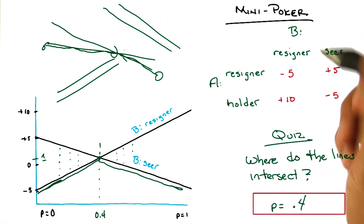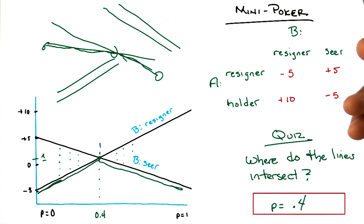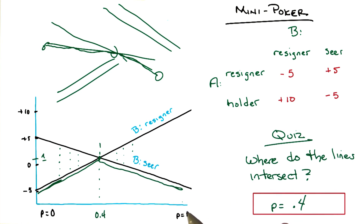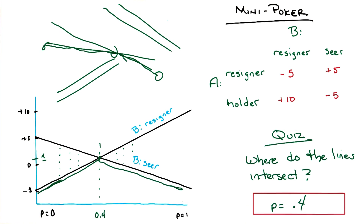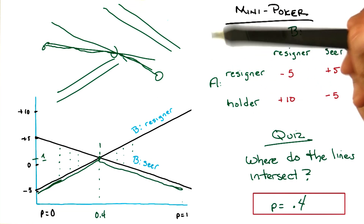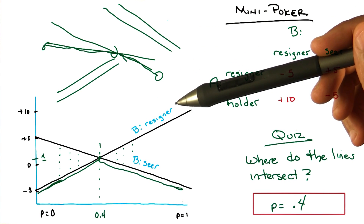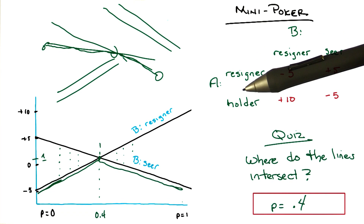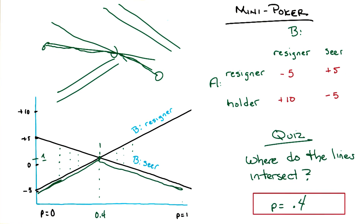So if you wanted an algorithm to choose the right thing to do for A: you basically plot the lines, take the min at every point, and find the maximum point. So you maximize the minimum of the two other things — it's like maximin again. In fact it is exactly minimax or maximin, except there's this other parameter which is the probability, which is how you determine how you're doing the minimax. In this bigger space, it's minimax.